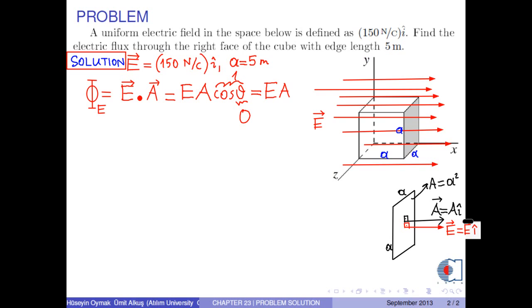So we write E times A. The area of the right face of the cube is a squared.